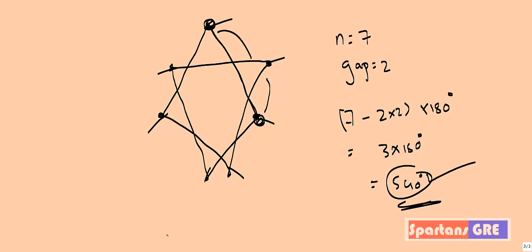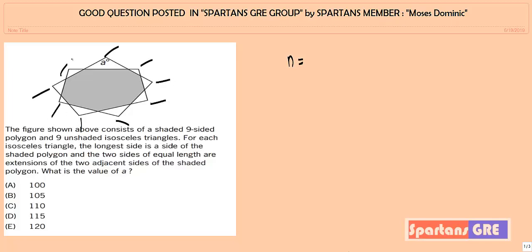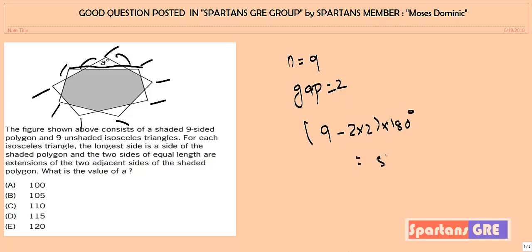Now the concept is done. Let's apply it to the actual question. This 9-sided polygon is also a polygon — it may not be regular, but the formula still applies. Counting vertices: n = 9. For the gap, taking any single line, there are 2 jumps, so gap = 2. Total internal angle = (9 minus 2×2) × 180 = 5 × 180 = 900 degrees. So the total internal angle for this polygon is 900 degrees.